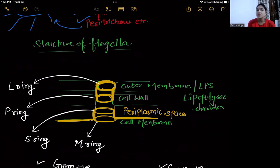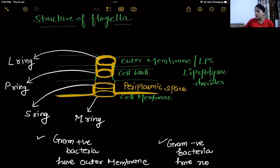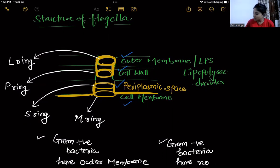The basal body is ring-shaped. In some cases there are two rings, and in some cases four rings. Looking at the outer envelope of bacteria: there is an outer membrane called the lipopolysaccharide layer (LPS), then the cell wall, then the cell membrane, and then the cytoplasm. The space between cell wall and cell membrane is called periplasmic space. The rod-shaped structure is the basal body, and it is surrounded by rings — so we have four rings, arranged as two ring pairs.